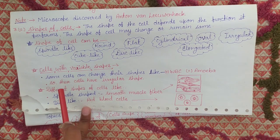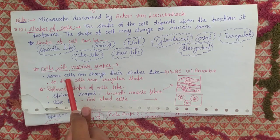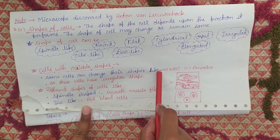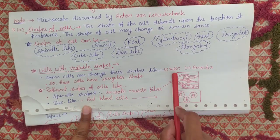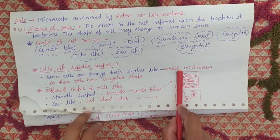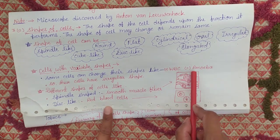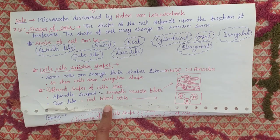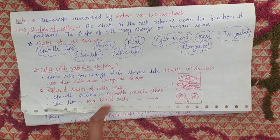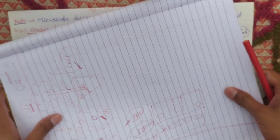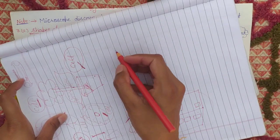So you will see your next point: some cells can change their shape. An example is WBC — white blood cells. And the next one is amoeba. You know very well the structure of amoeba. It has no particular shape.